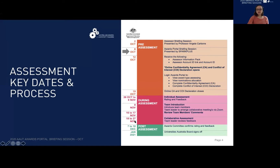Two days prior to the collaborative assessment you can log in to review your team members' comments, and we encourage you to do so as this is part of the preparation. From the 18th to the 27th of November you will meet with your team to discuss the collaborative assessment. Thereafter in December, the awards committees will confirm the rating, and in January the UA board will sign off.